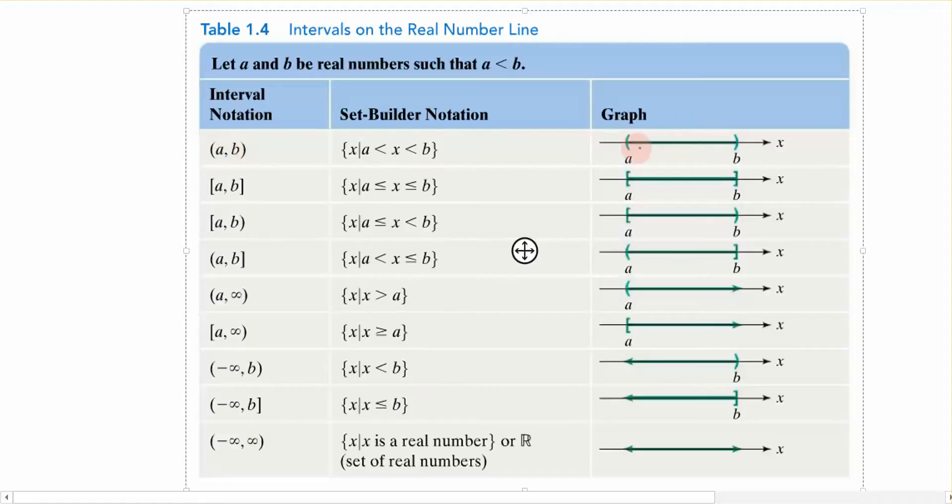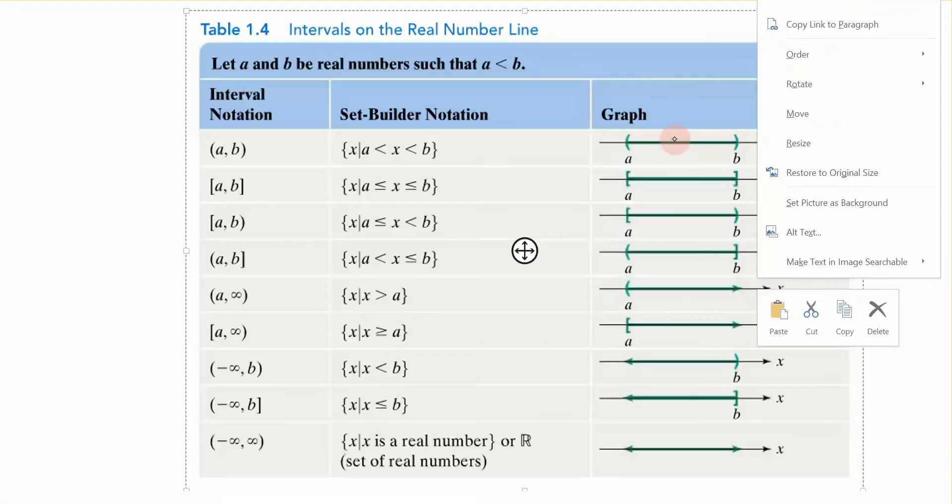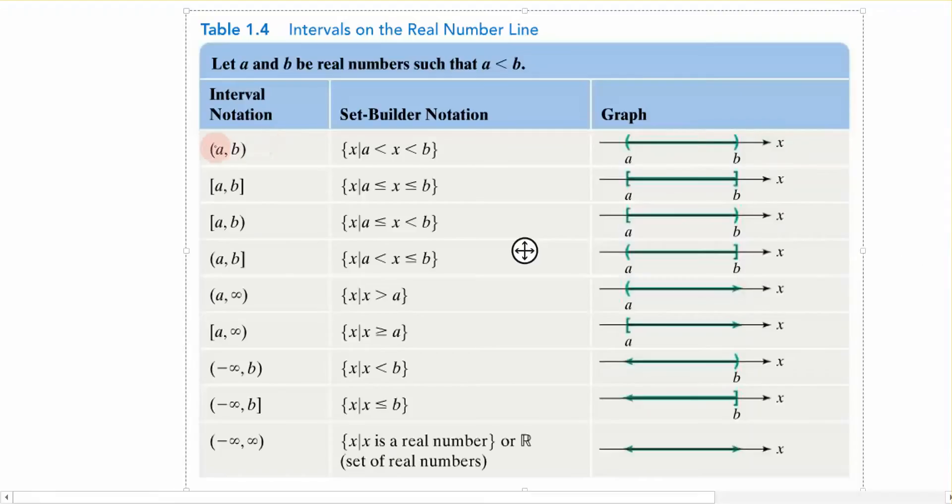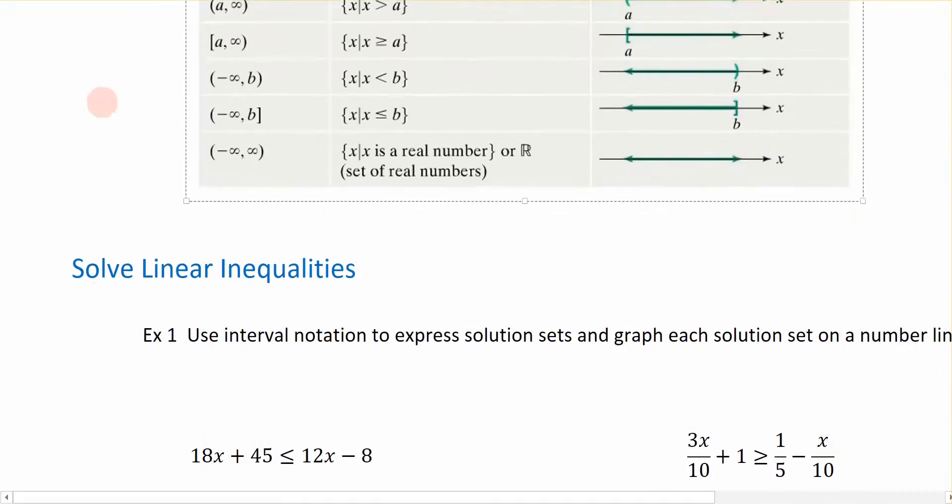And then over here you can see that the graph represents that as well. The nice thing about interval notation and the graph is if you'll graph the solution set, it will pretty much give you the interval notation that you need. Now remember that whenever we have infinity for a solution part of our set, then it always will have a parenthesis around it because we never really get to the end of infinity.